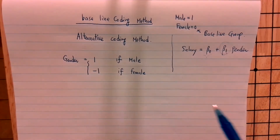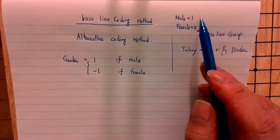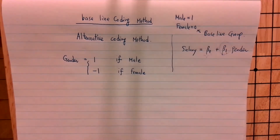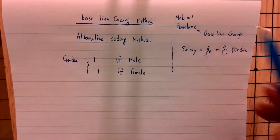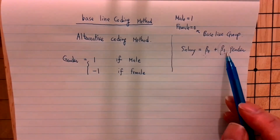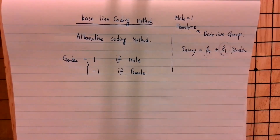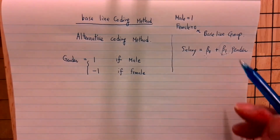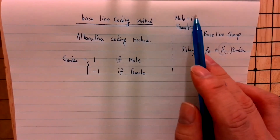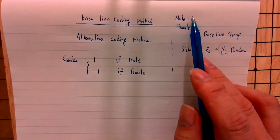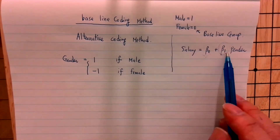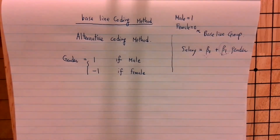Some people may ask: can I set male to zero and female to one? Of course you can, but if you do that, beta-one will be a negative number, because males make more money than females. If you make male the baseline group — male equals zero — and female equals one, then beta-one becomes a negative number.